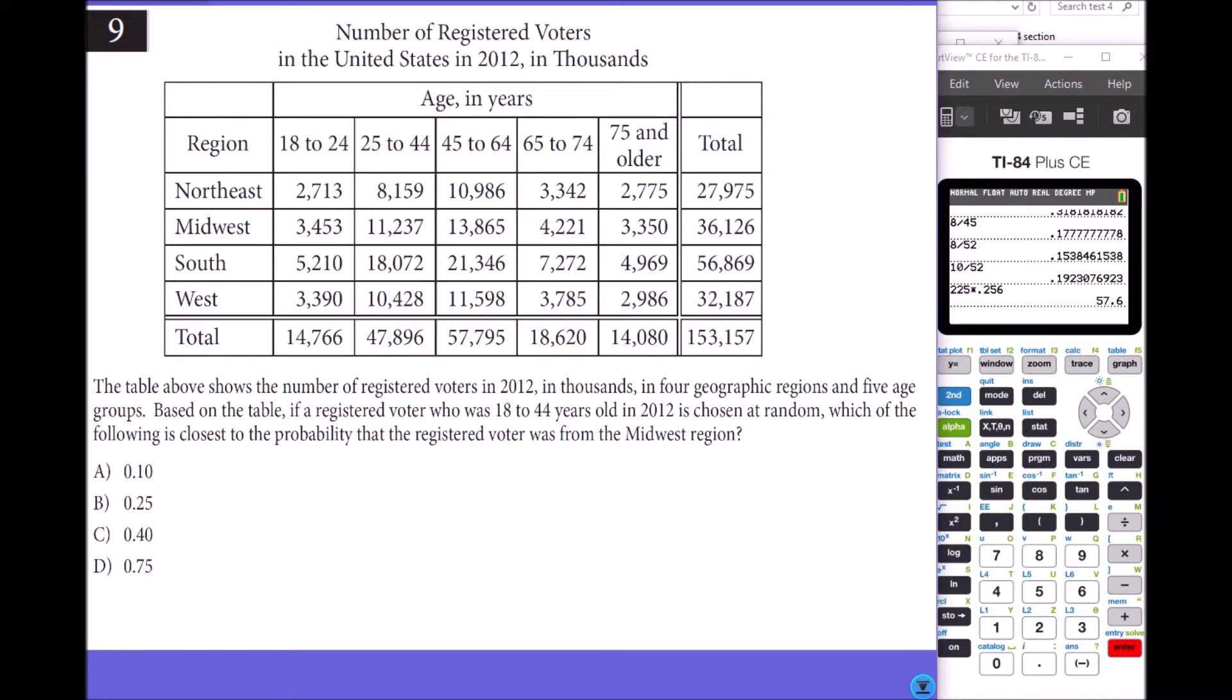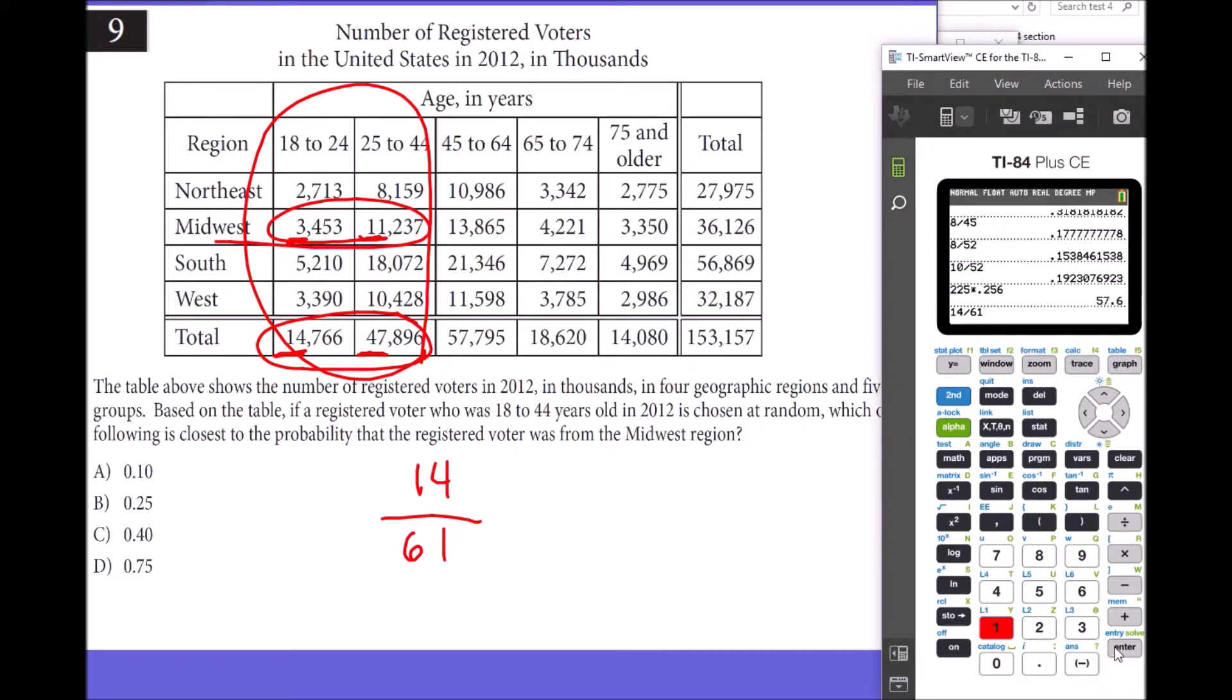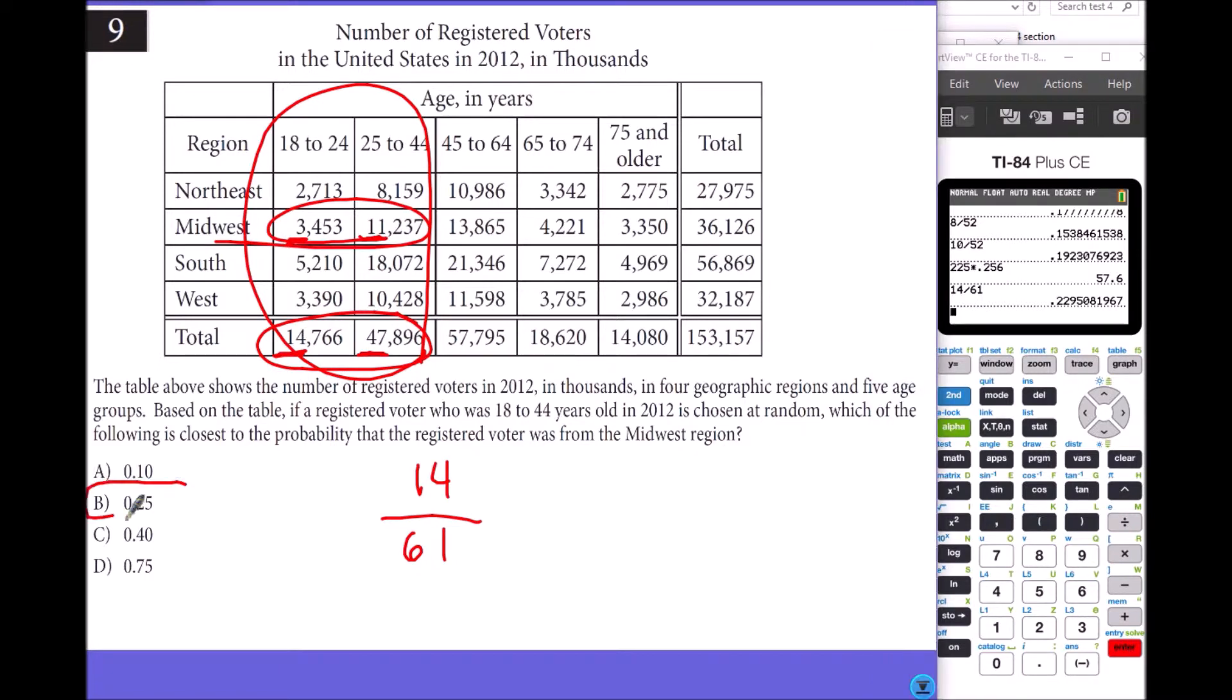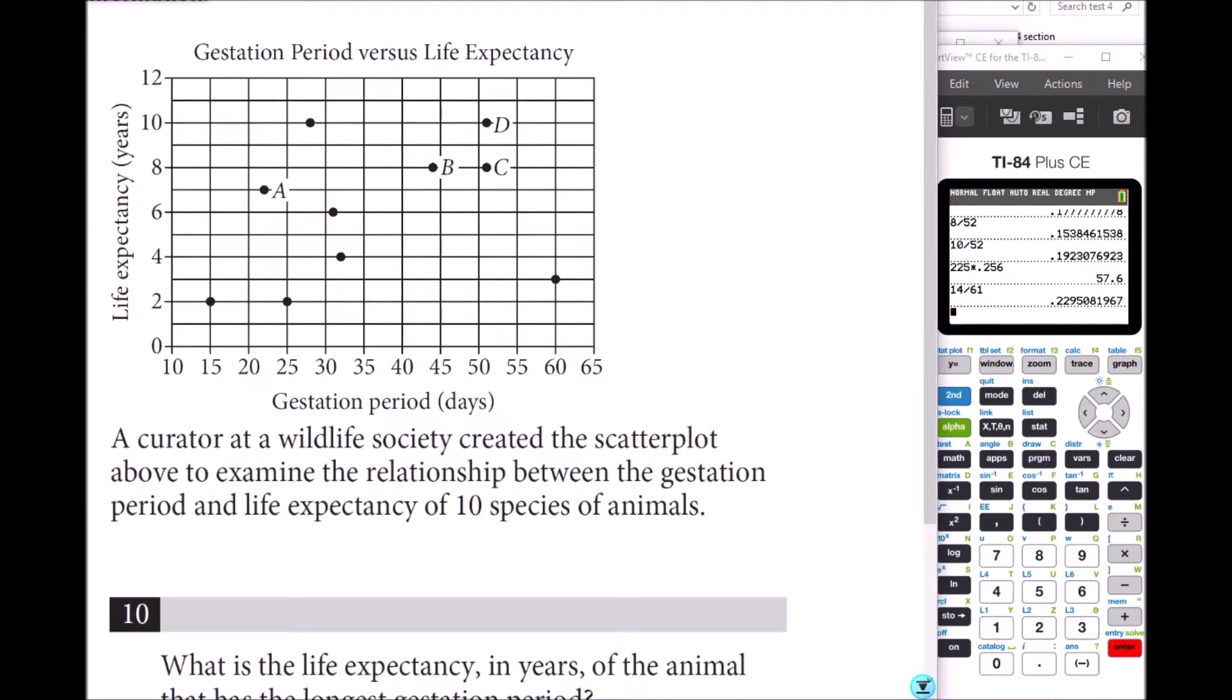Number 9: The table shows the number of registered voters in 2012 in thousands in 4 geographical regions and 5 age groups. Based on the table, if a registered voter who was 18 to 44 years old is chosen at random, which of the following is closest to the probability that the registered voter was from the Midwest region? So add these two age groups divided by these two age groups added for all regions. To save time, just add the thousands. I'll do 3 plus 11, which is 14,000, divided by 14,000 plus 47,000, which is about 61,000. It seems like 0.2 somewhere, so it has to be B.